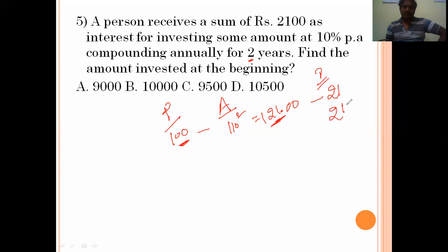Here in this problem, that person gets how much interest? 2100. Now we find the corresponding principal amount. 2100 corresponds to 21, so the principal is 100 times 2100 divided by 21, which equals 10,000. We invest an amount of 10,000 as principal. Option B is the right answer.